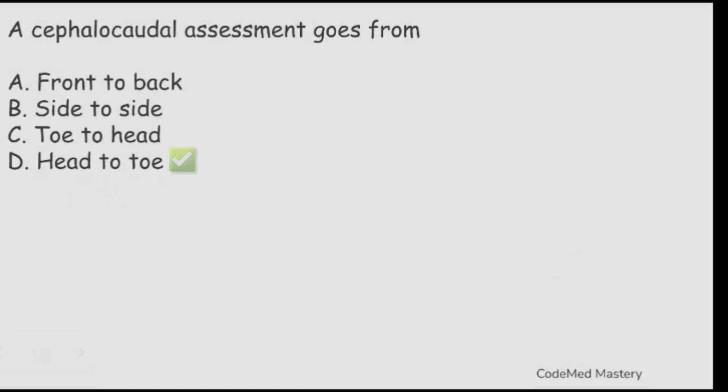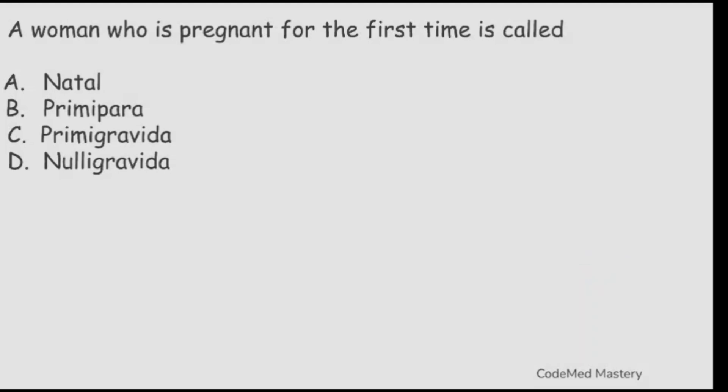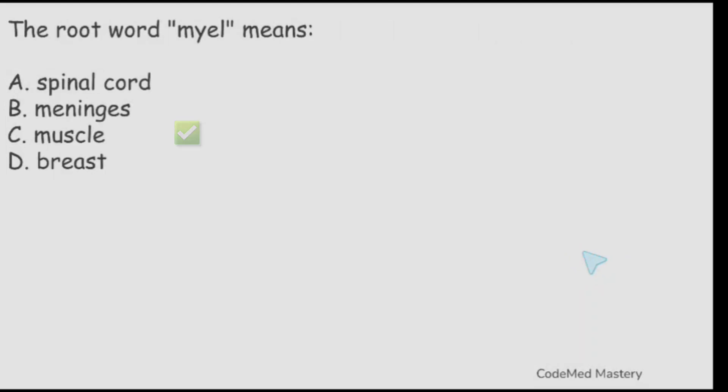Next question: a woman who is pregnant for the first time is called? Option A: nettle. Option B: primipara. Option C: primigravida. Option D: nulligravida. The right answer is option C, primigravida. Next question: the root word 'myel' means? Option A: spinal cord. Option B: meninges. Option C: muscle. Option D: breast. The right answer is option A, spinal cord.